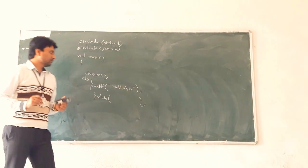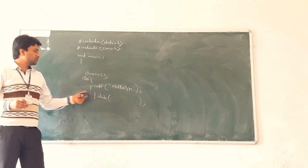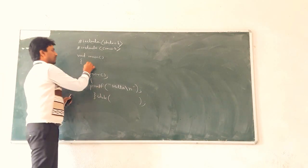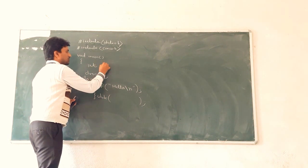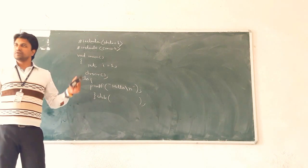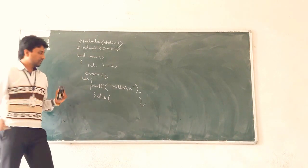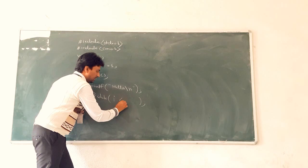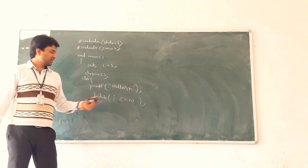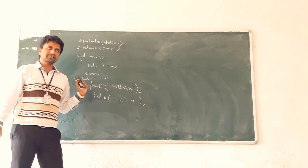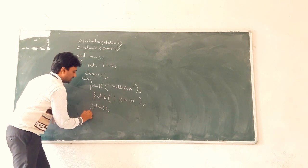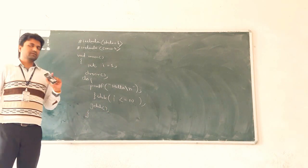What is the condition part? We need to execute the loop 10 times, so take one variable — suppose i — and initialize i to 1. What is the condition? i less than or equal to 10. After that, getch, and then the body of main is complete.